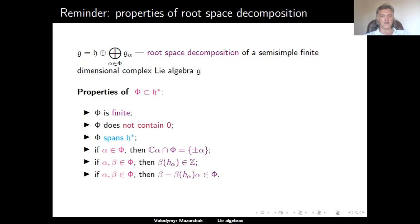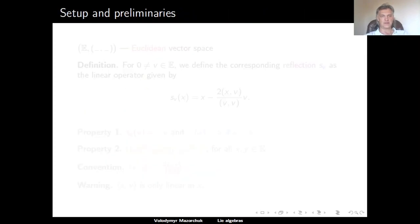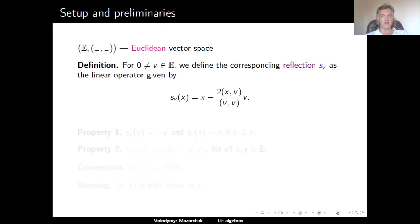Today we will use these properties to define axiomatically a mathematical construct called the root system. We define root systems in the following setup. We start with a finite-dimensional Euclidean vector space — that is, a finite-dimensional real vector space with an inner product, a positive definite symmetric bilinear form. For each non-zero vector V in our Euclidean vector space E, we define the corresponding reflection S_V, given by the formula: S_V(X) = X minus 2 times the scalar product of X and V divided by the scalar product of V and V, times V.